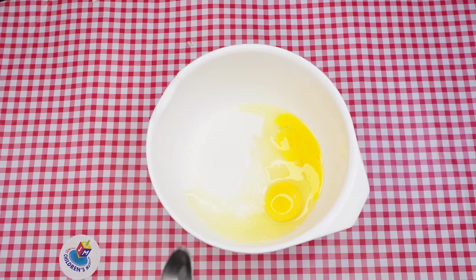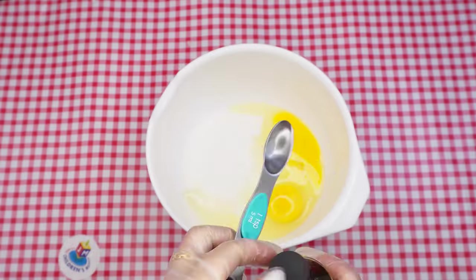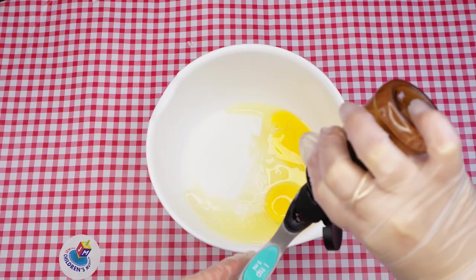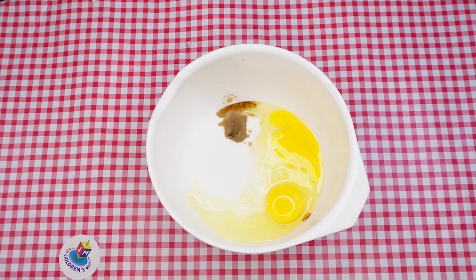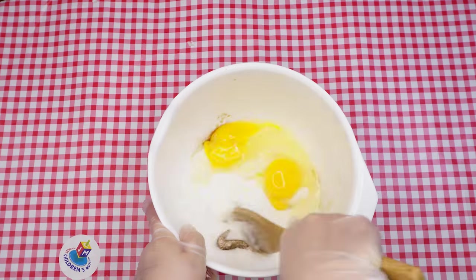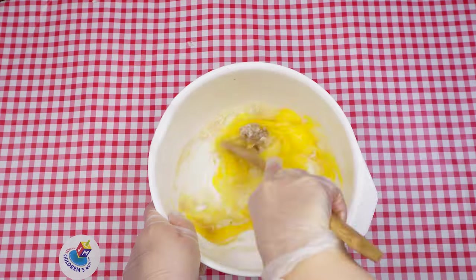Next we'll measure one teaspoon of vanilla, pour it into the bowl. Then we will give this mixture a good stir with our handy wooden spoon. Be sure to combine the ingredients well.